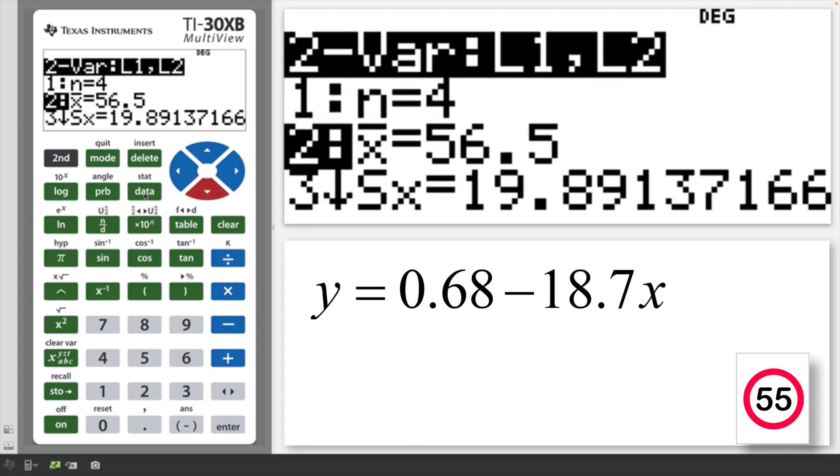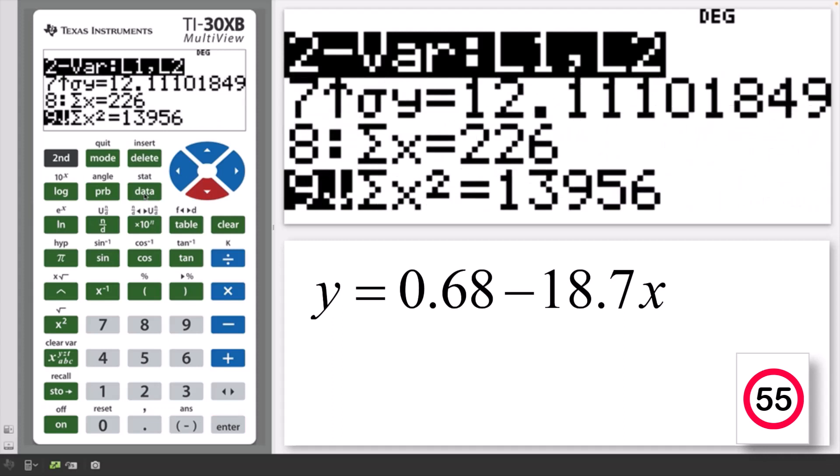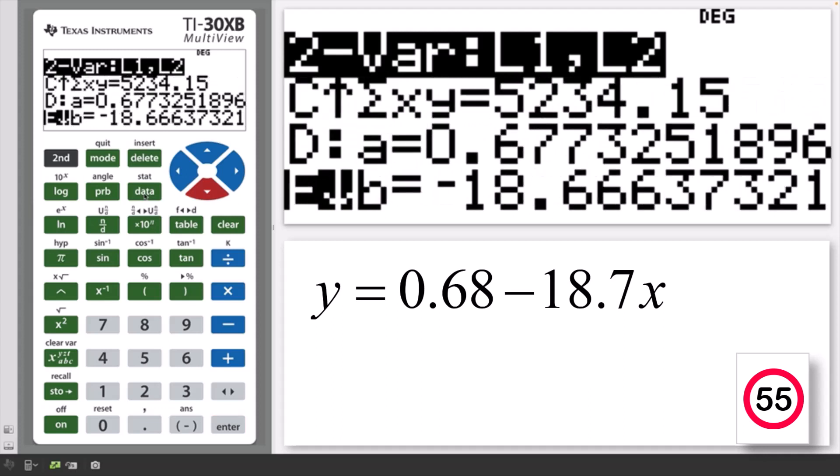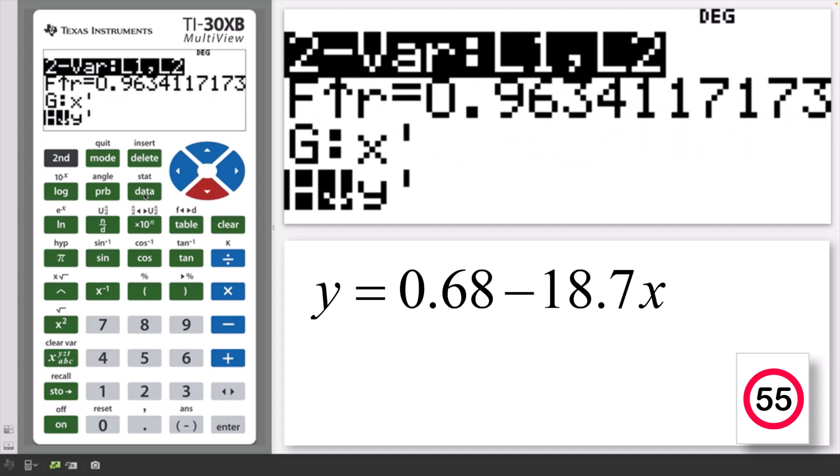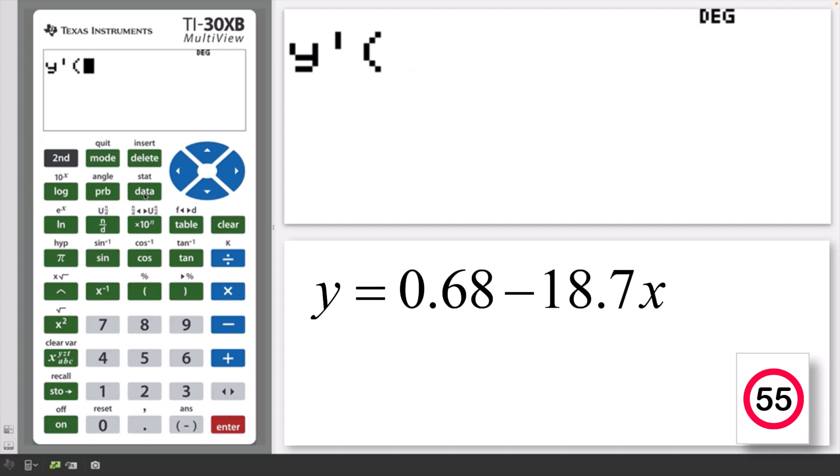Scroll through the list to locate y dash. Press enter. Enter 55. Close the brackets and press enter.